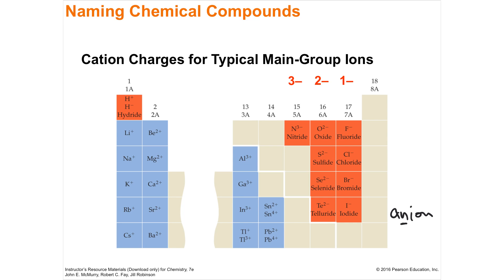Thinking about charges: group one is positive one, group two is positive two, group three is positive three. Going backwards for negatives: group seven is negative one, group six is negative two, and group five is negative three.